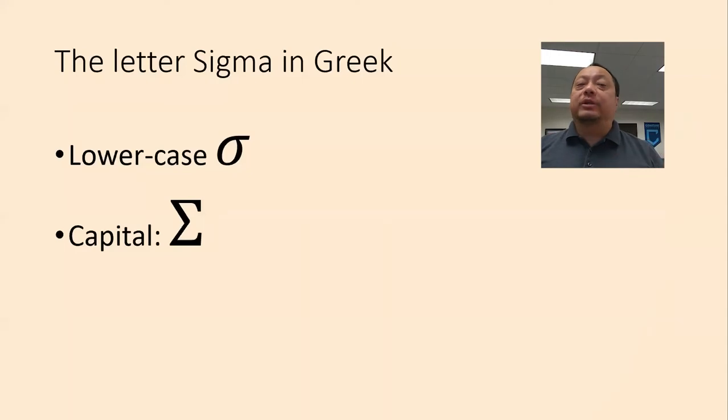There are two different sigma symbols. Sigma is a Greek letter equivalent to our letter S, and just as we have a lowercase S and a capital S, the Greek language has a lowercase sigma and a capital sigma, and they have different meanings in math and in statistics.